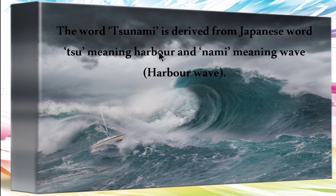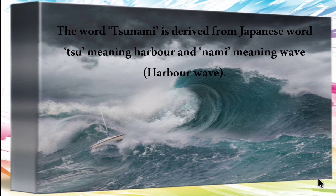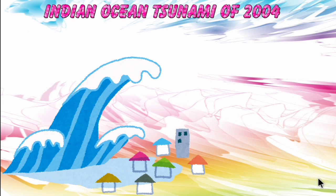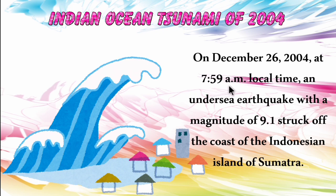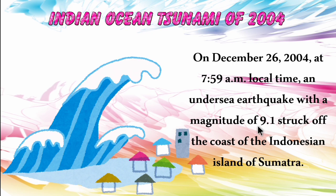The word tsunami is derived from Japanese, where 'su' means harbor and 'nami' means wave — so it is also called harbor waves. The Indian Ocean tsunami of 2004 occurred on December 26, 2004, at 7:59 am local time, when an undersea earthquake of magnitude 9.1 struck off the coast of the Indonesian island of Sumatra.